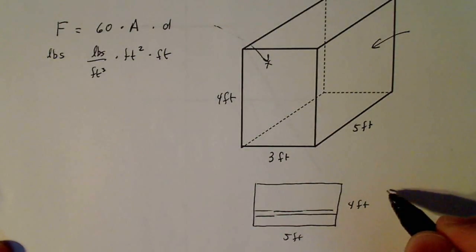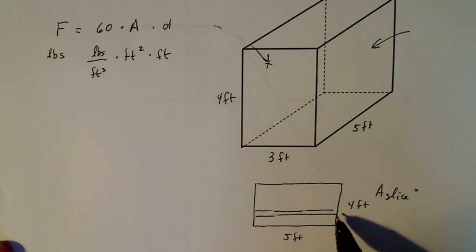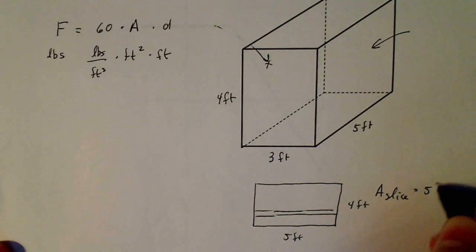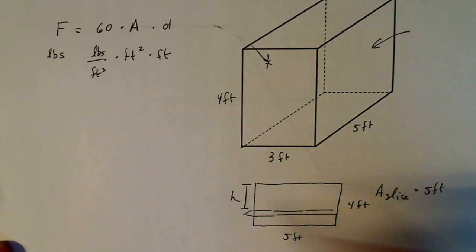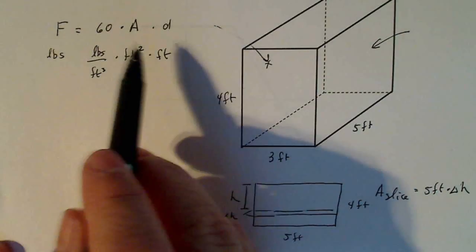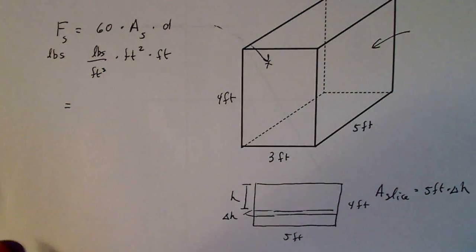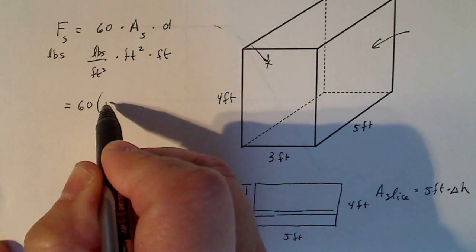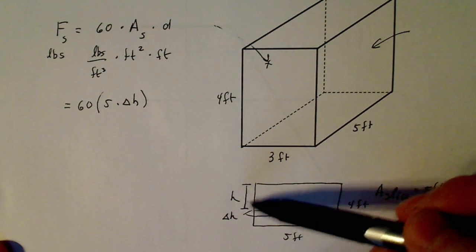So now I have to think about the area of my slice. And it's just a long, thin rectangle whose width is five feet and whose thickness—if I describe H as being the depth, then the thickness is delta H. So length times width gives me the area of my slice. So that's what this is up here. Actually, I want to do sub S for slice here to distinguish it. So I have 60 times 5 times delta H. And then the depth of each slice, no matter where I slice it, is going to be H.